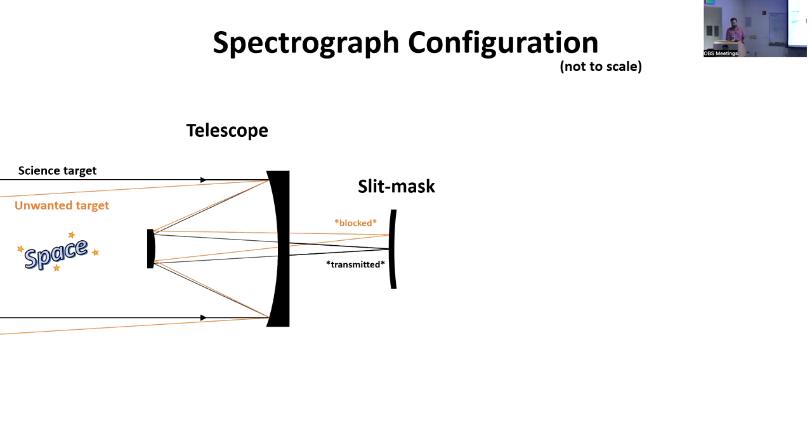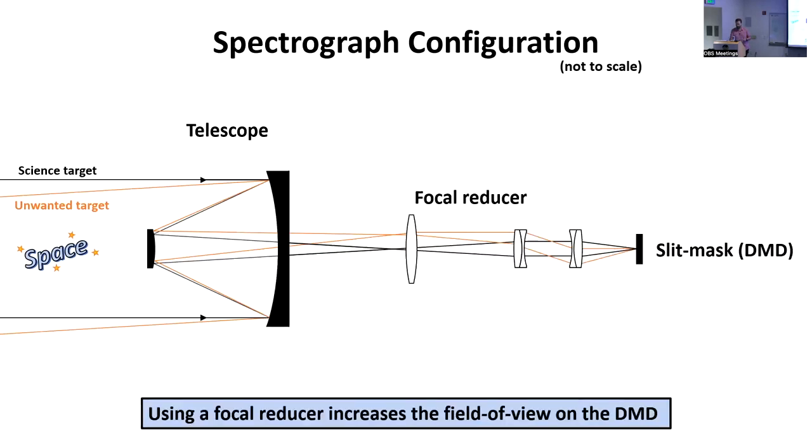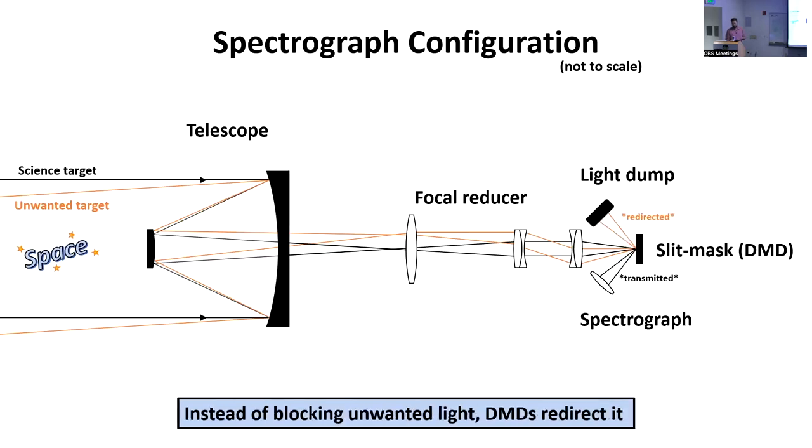Let's go back to our cartoon of our spectrograph, and we're going to change it up a little. This time I'm going to use a DMD and show how using a DMD would be different than a typical slit mask spectrograph. In this configuration, we have to add an optical instrument I'll call a focal reducer. The reason why we do this is the DMD is pretty small, and the focal plane at a telescope like Magellan is much larger than that. We use a focal reducer essentially to shrink the image, and this allows us to put more field of view onto the DMD, which we're using as our slit mask. From here, instead of either letting light pass or blocking it, we really redirect it into two different directions.